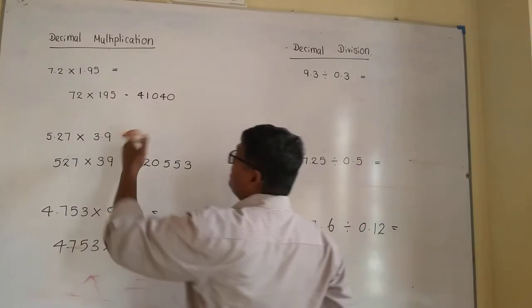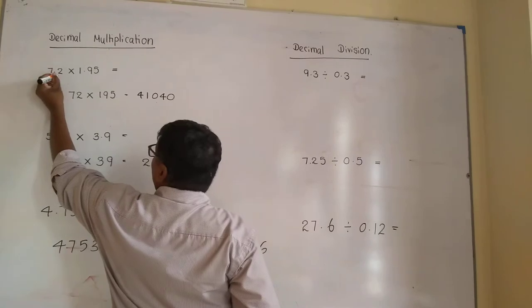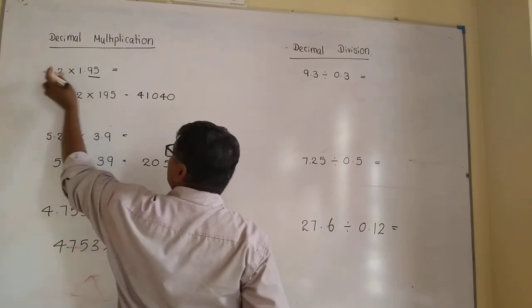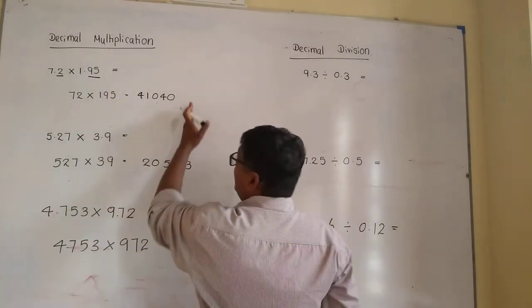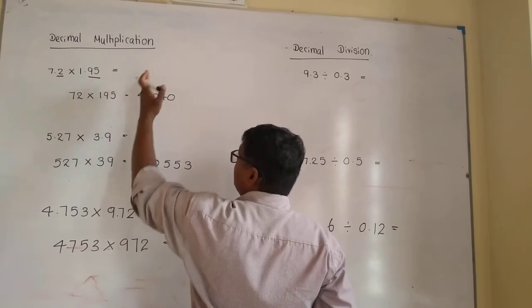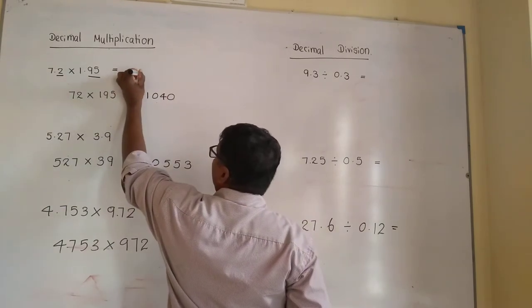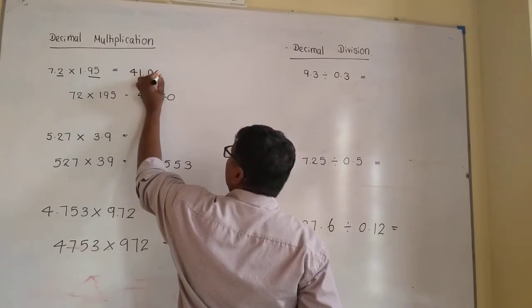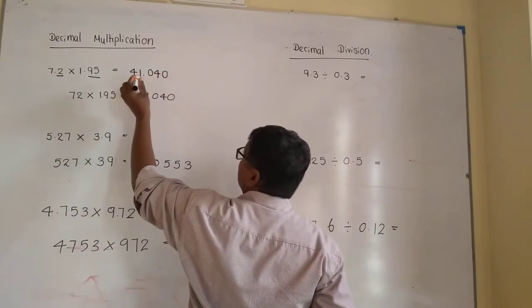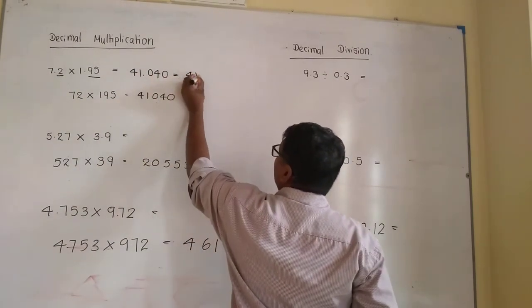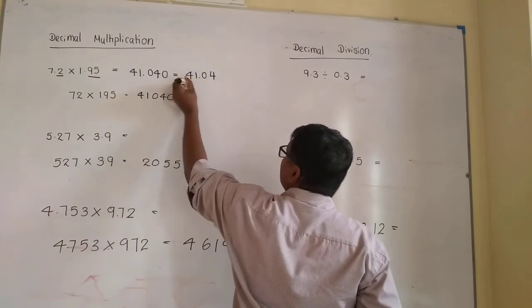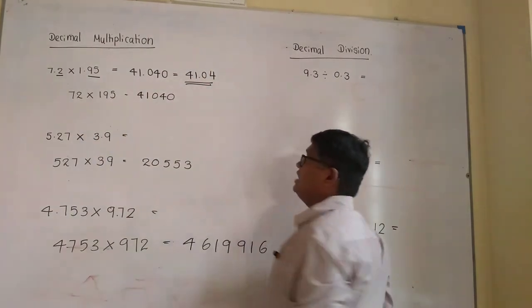After that, look at the two numbers and count how many decimal places they hold together: 1, 2, 3. You have to leave three decimal places from the answer: 41.040. That means 41.04 is enough. The last zero doesn't have to vary.